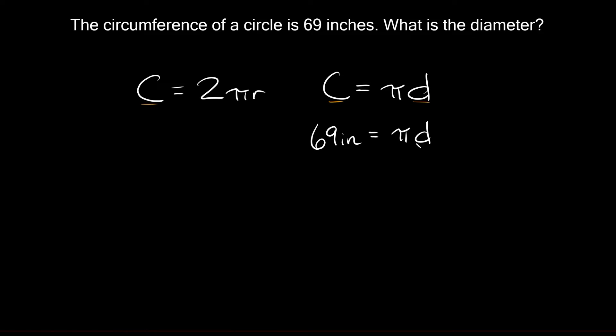Now to solve for d we need to get rid of this π, so we can divide both sides by π. On this side the π's cancel out, and over here 69 divided by π.